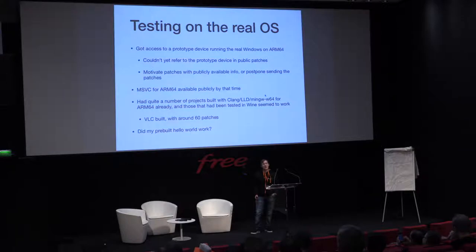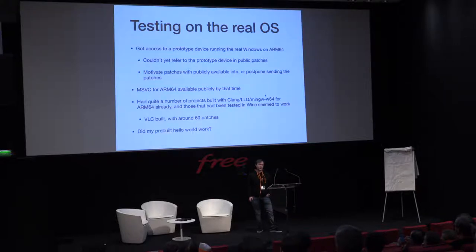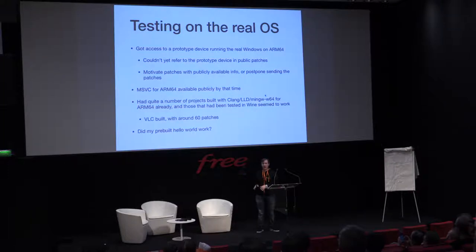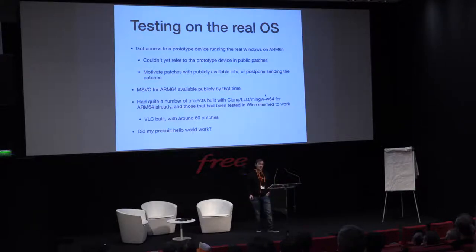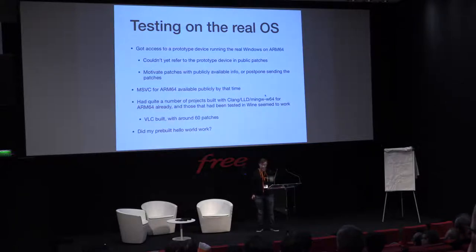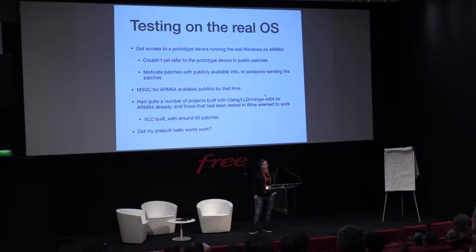At FOSDEM last year, JP promised me he was going to get me a prototype test system — and he usually holds his promises, so he managed to get me one. It was of course all secret, so you can't talk about it in public patches. When you get the device and fix bugs, you can't say 'I tested this on secret hardware, that's why you need to change it this way.' Instead I had to find details in publicly available information. But at this point the MSVC compiler for ARM64 was actually public, which made it a bit easier to test things out. And at this point, when I got the device, I had more or less built all of VLC with the new toolchain — with quite a few patches, some of which I upstreamed to VLC later, and some I fixed in the toolchain.